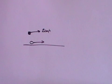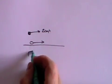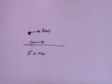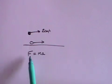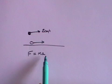Newton's second law follows on from this by saying that if you do want to change the speed of something, then you have to apply a force. This gives us one of the most common equations we will find: F equals ma. F is the force, m is the mass, and a is the acceleration.